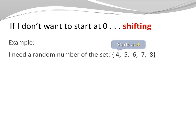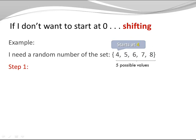Let's assume I need a random number of the set 4, 5, 6, 7, or 8. Notice my set doesn't start at zero — it starts at 4. The first step is once again the same: I'm going to count the number of possible values. There are five possible values, and I'm going to call nextInt with argument 5.